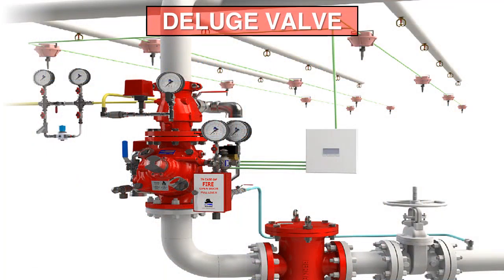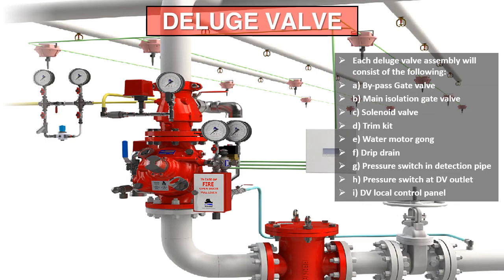We will see the major components of the deluge valve and its working principle. The major components of a deluge valve assembly are: bypass gate valve, main isolation gate valve, solenoid valve, trim kit assembly, water motor gong, drip drain, pressure switch in detection pipe, pressure switch at DV outlet, and deluge valve local control panel.